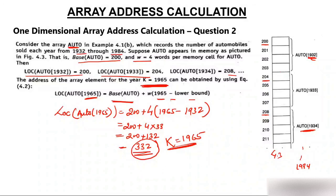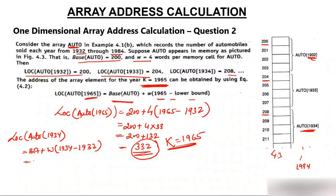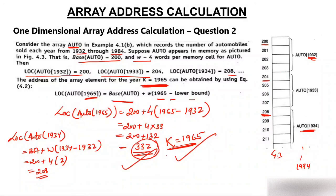To verify the formula is working correctly, let's calculate the address of auto[1934]. Formula: Location = Base(auto) + W * (k - Lower Bound) = 200 + 4 * (1934 - 1932) = 200 + 4 * 2 = 200 + 8 = 208. And from the given figure, the address of auto[1934] is indeed 208. So the formula is working correctly.